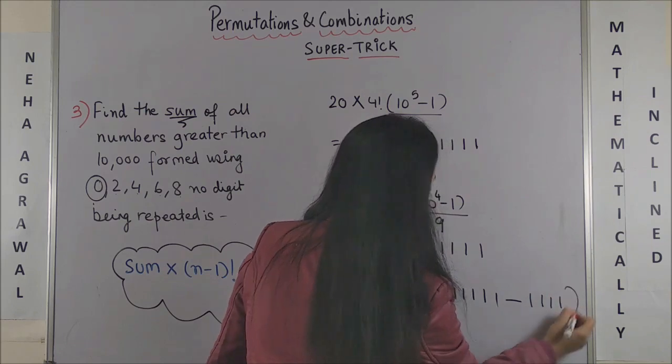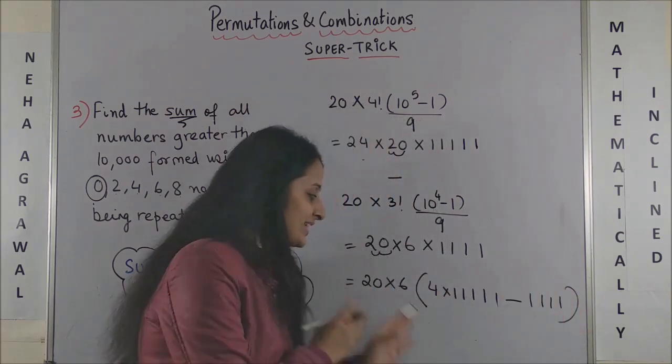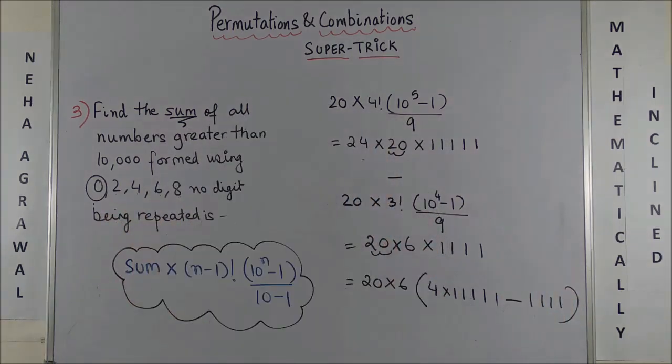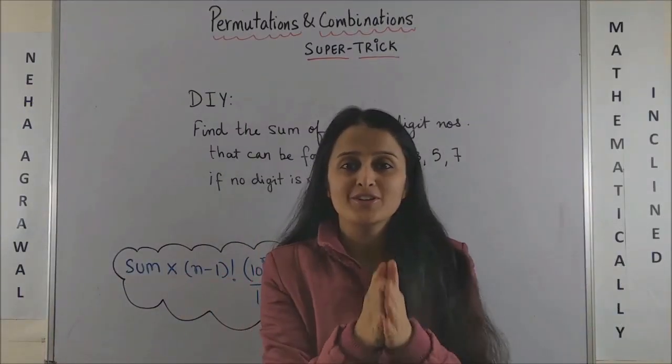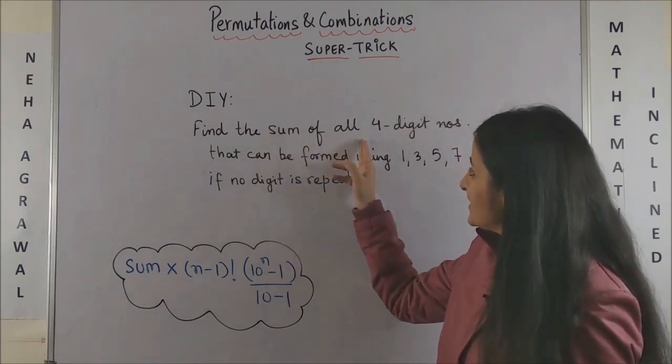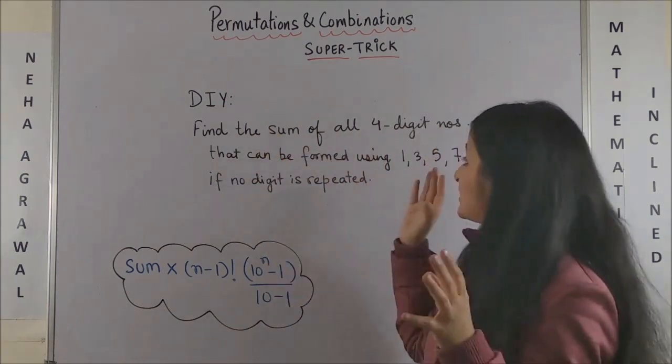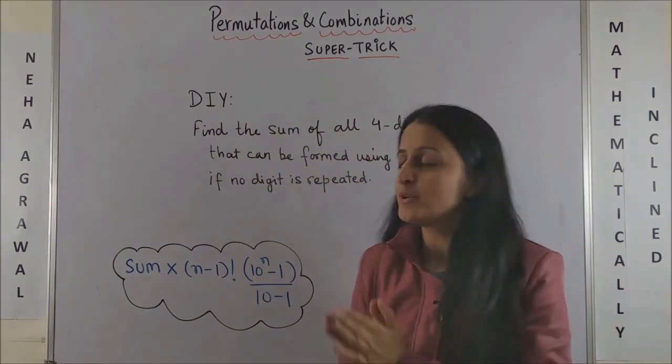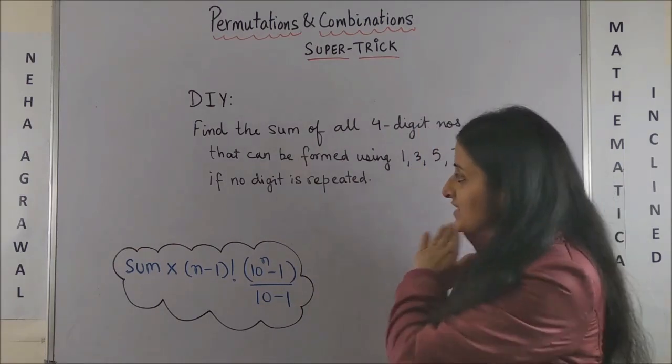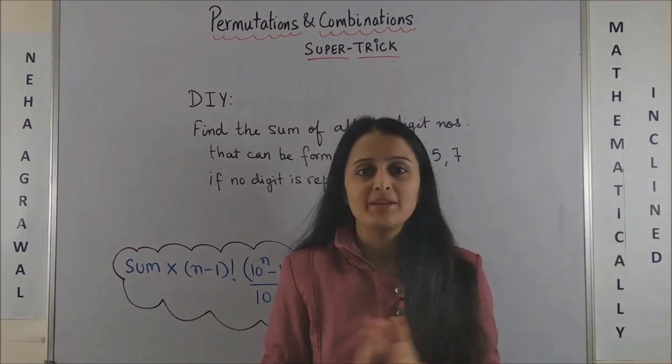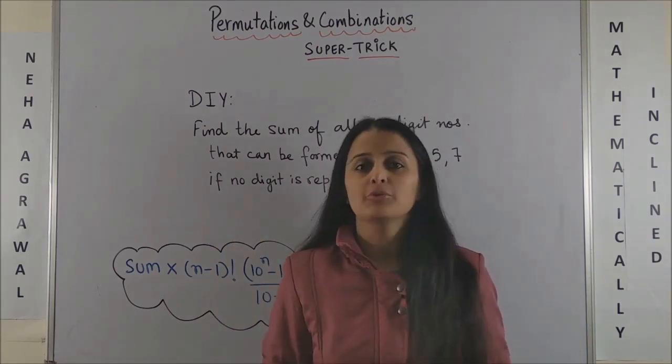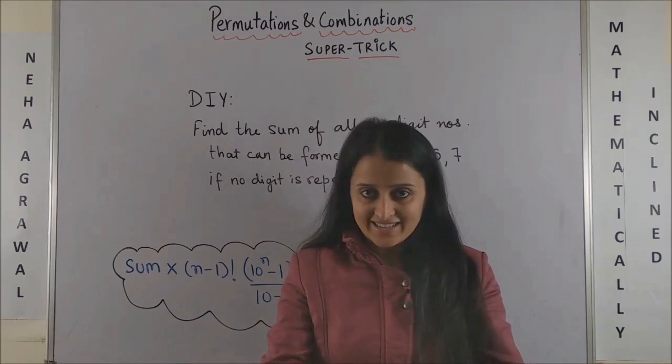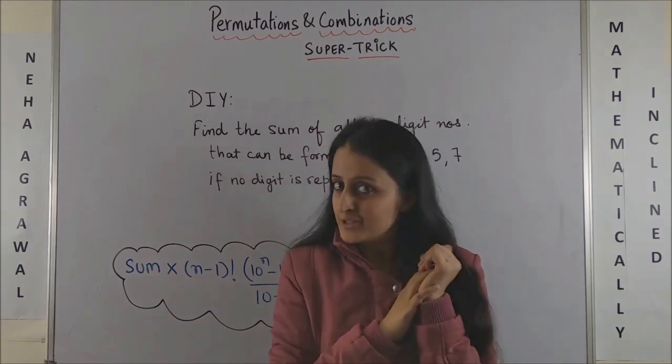I am sure now you can get this answer super quick. It is time for your DIY, yes, do it yourself question. It says find the sum of all four-digit numbers that can be formed using the digits 1, 3, 5, 7 where no digit is repeated. So answer fast and accurate because you know the top three correct answers always get named in my upcoming videos.